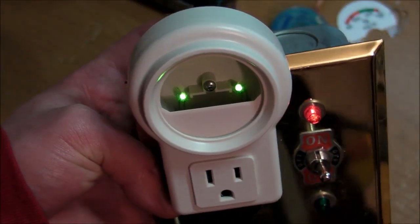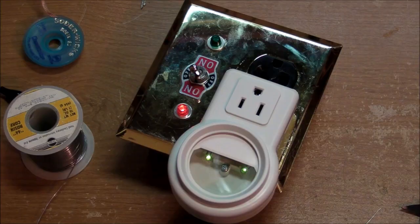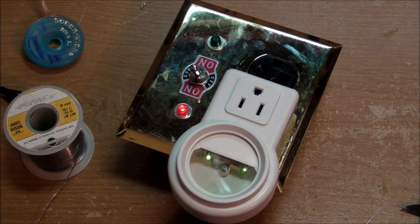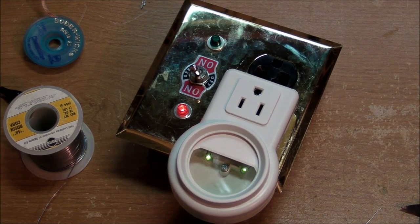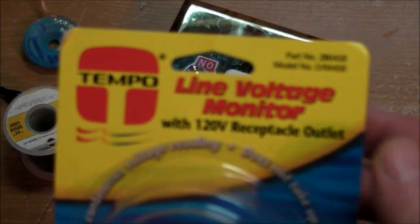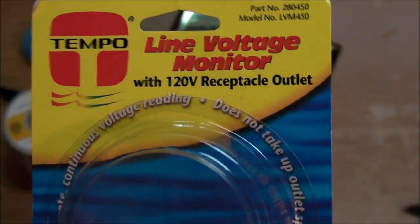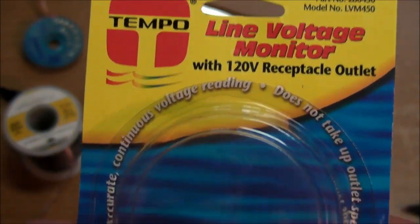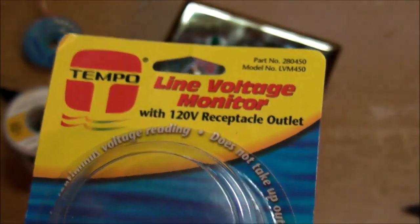And that is my review, teardown, accidental destruction, and modification of this Tempo line voltage monitor that I bought from American Science and Surplus for $9.50.